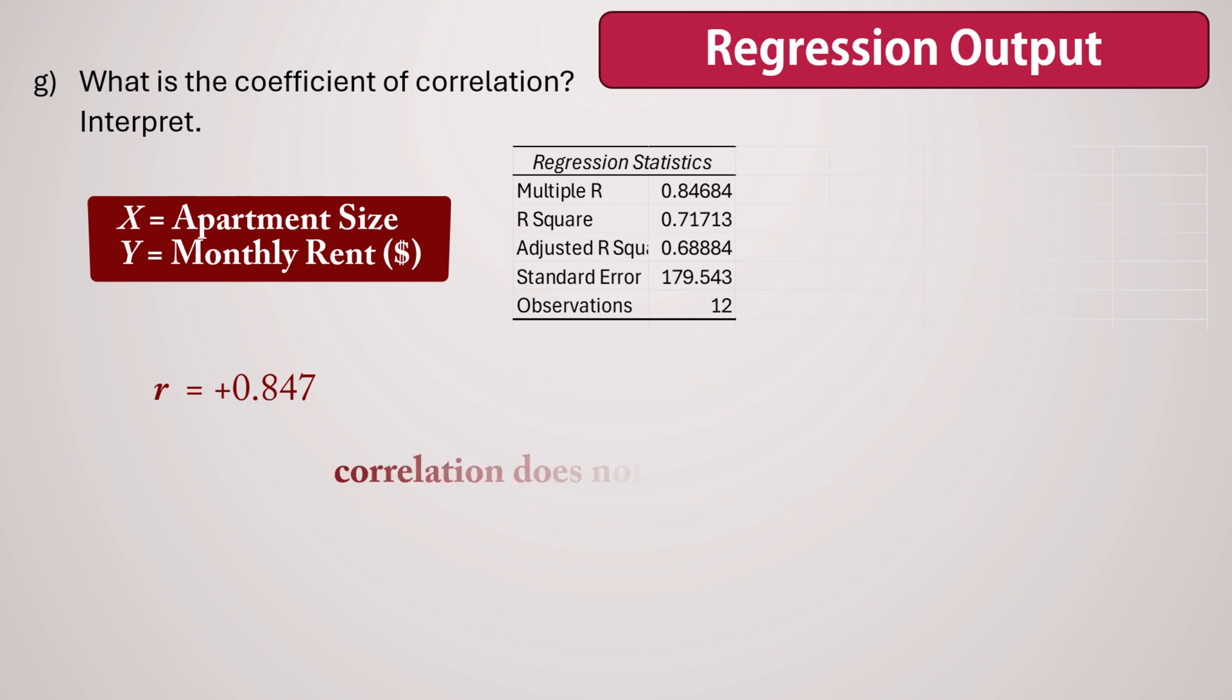Remember, correlation does not imply causation, so we wouldn't say large apartments cause higher prices. But we can say that larger apartments tend to have higher prices.